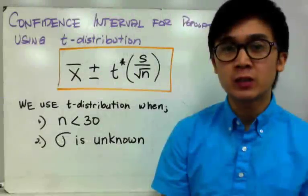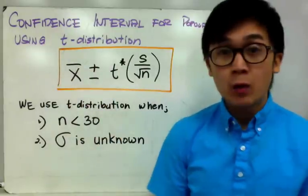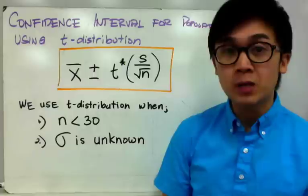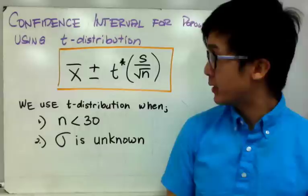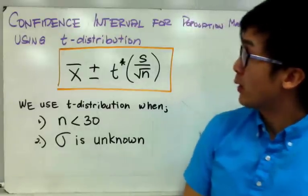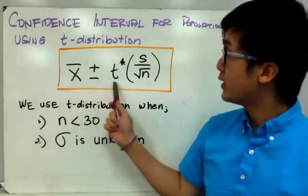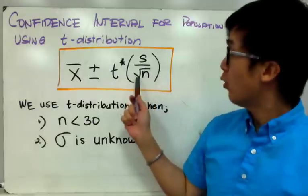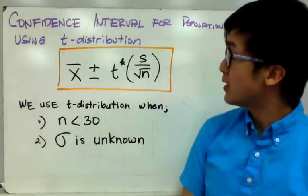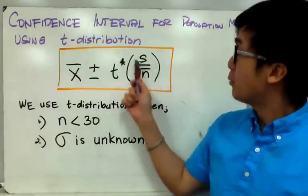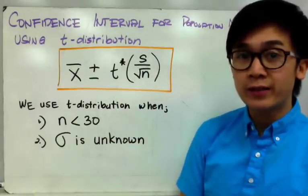In computing the confidence interval for population mean using the t-distribution, we need to make sure that the population sigma is not given and the sample size is less than 30. The new formula is x̄ ± t* × s / √n. The difference from the z-distribution is that we use the sample standard deviation because the population standard deviation is not given.